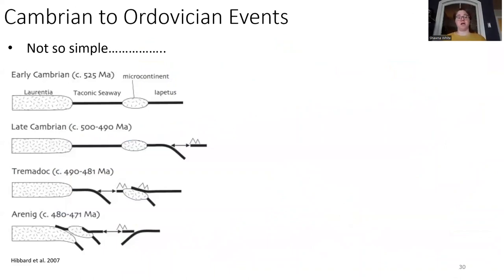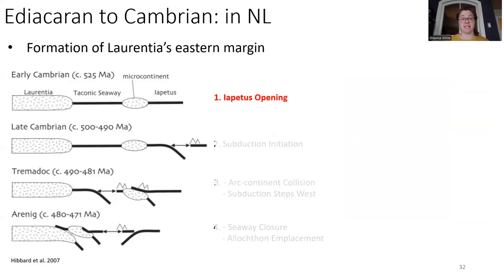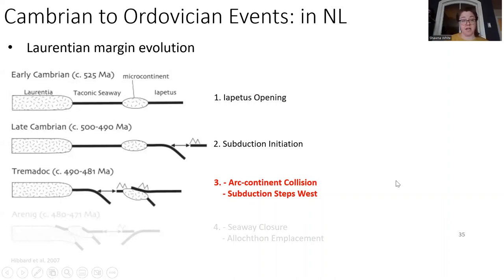I'm going to take you through the time steps of events from Cambrian to Ordovician that we've been able to constrain fairly well from the work done in Newfoundland. Unlike the classical model of the Taconian orogeny — the simple arc-continental collision often taught in classes and on Wikipedia — that microcontinental block actually creates quite a bit of complexity. We had opening of the Iapetus ocean and severing of a microcontinental block from Newfoundland, setting up an already complicated picture.